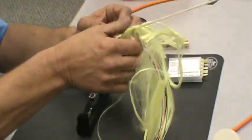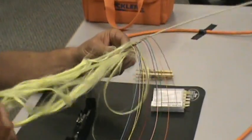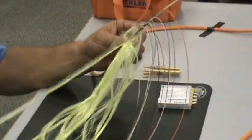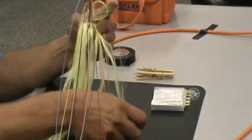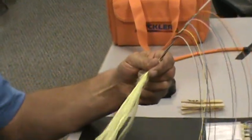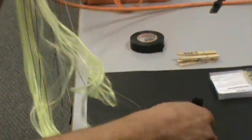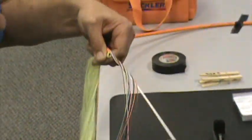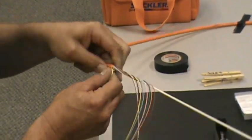You want to pull your mid-yarn—what you connect your pulling system to—to one side, and make sure, and it's happened to all of us, make sure that you don't have one of your fibers in it.